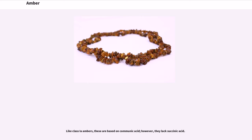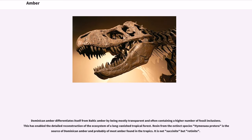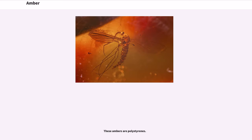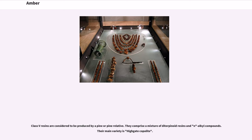Succinic acid may not be an original component of amber, but rather a degradation product of abietic acid. Like Class Ia ambers, Class Ib is based on communic acid; however, they lack succinic acid. Class II is mainly based on enantiolabdatrienonic acids, such as ozic and zanzibaric acids; its most familiar representative is Dominican amber. Dominican amber differentiates itself from Baltic amber by being mostly transparent and often containing a higher number of fossil inclusions, enabling the detailed reconstruction of the ecosystem of a long-vanished tropical forest. Resin from the extinct species Hymenaea protera is the source of Dominican amber. These ambers are formed from resins with a sesquiterpenoid base such as cadinene. Class IV ambers are not polymerized but mainly consist of cedrine-based sesquiterpenoids. Class V resins are considered to be produced by a pine or pine relative; they comprise a mixture of diterpenoid resins and n-alkyl compounds, with their main variety being highgate copalite.